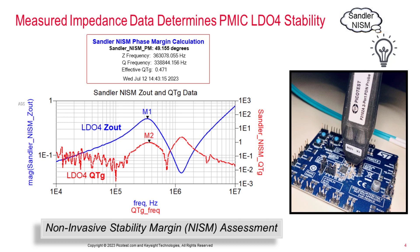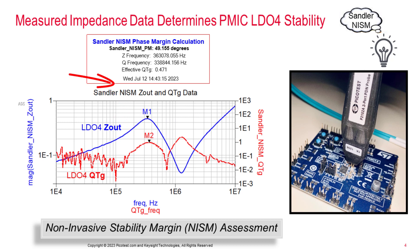Since we always have access to an output capacitor, I developed a fast, simple, and non-invasive stability margin analysis tool — NISM for short — using the voltage regulator's output impedance. This NISM calculation is a popular function on many network analyzers.